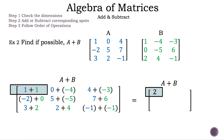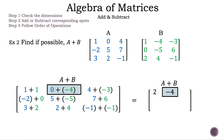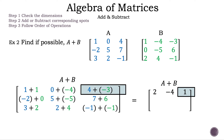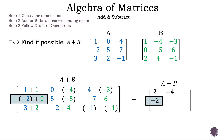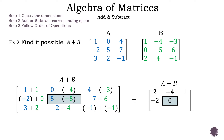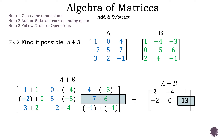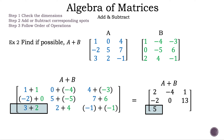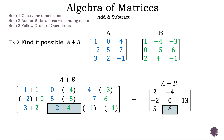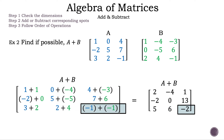1 plus 1 is 2. 0 plus negative 4 is negative 4. 4 plus negative 3 is 1. Negative 2 plus 0 is negative 2. 5 plus negative 5 is 0. 7 plus 6 is 13. 3 plus 2 is 5. 2 plus 4 is 6. And negative 1 plus negative 1 is negative 2. And there we have it — the resultant matrix for example 2.